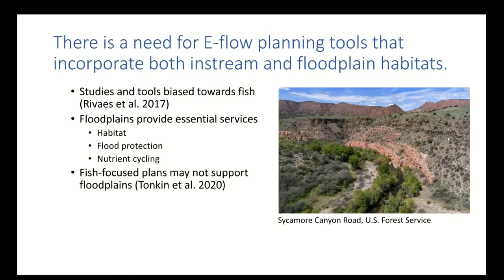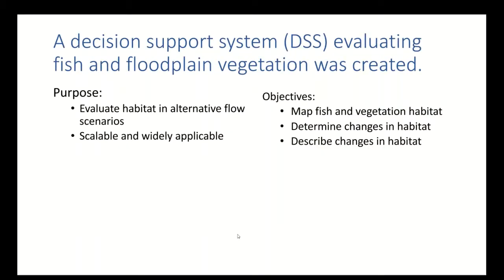There is a need for an environmental flow planning tool that incorporates both in-stream and floodplain habitats. Studies and tools are typically biased towards fish, particularly high-value fish like salmon or endangered species. Floodplains provide essential services like habitat for fish, flood protection, and nutrient cycling, but fish-focused plans may not support floodplains because they operate on longer life cycles and depend more on inter-annual variability.